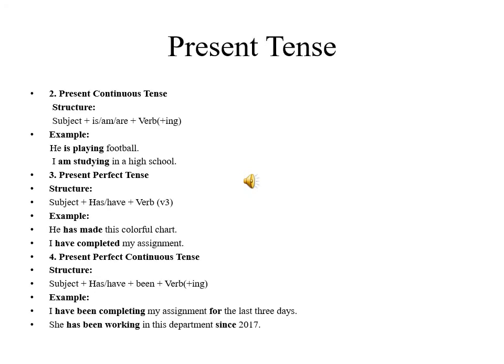Second type of present tense is present continuous tense. Its structure is subject plus AM, IS, or ARE plus verb plus ING, that is the fourth form of verb. For example, he is playing football.